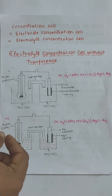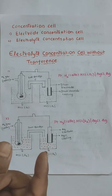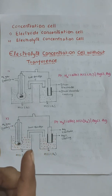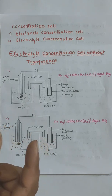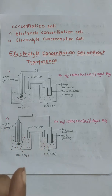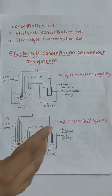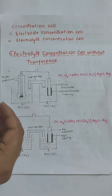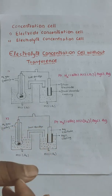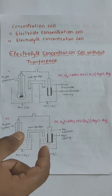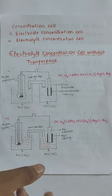These are concentration cells. Electrolytic concentration cells are those where there is only a difference in the concentration of the electrolytes — same electrolyte, only the difference in the concentration of the same electrolyte. So that is what we call the electrolytic concentration cell.